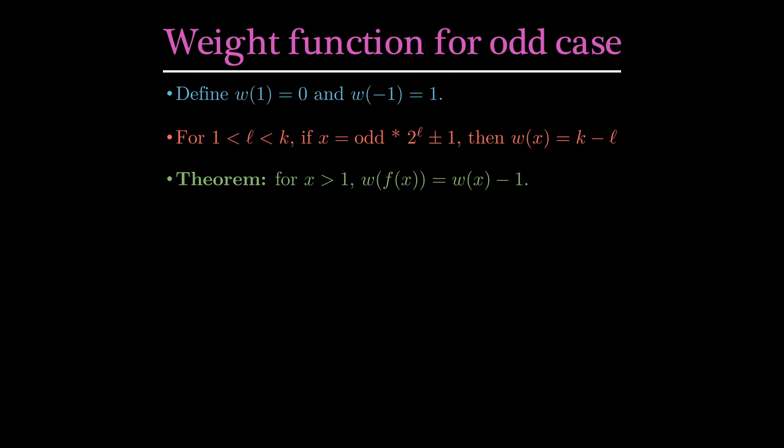Then we can show the theorem that w of f of x is w of x minus 1. Specifically, f makes the weight go down by exactly 1 under each application, and therefore the weight corresponds to layers in the tree going up if we label the root as layer 0.